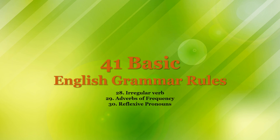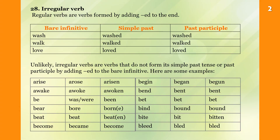Regular verbs are verbs formed by adding -ed to the end. The -ed ending actually has three sounds: T, D, and ED. For example, 'watched' — this -ed sounds like T.